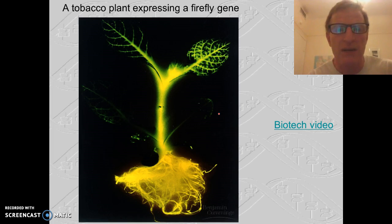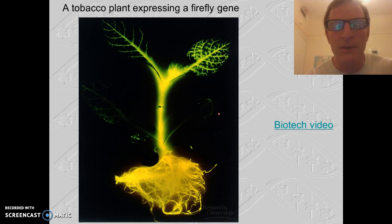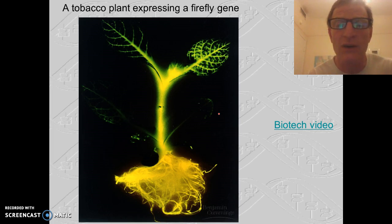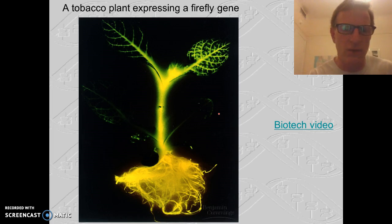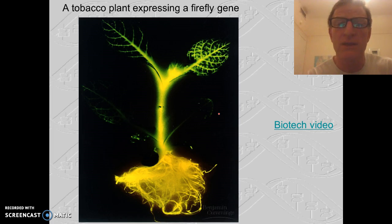Here's another example: a tobacco plant with a firefly gene inserted that causes it to glow in response to stress. When these tobacco plants are lacking a certain nutrient or water, they start to glow. You can imagine a farmer looking out at their crops and seeing them glow, knowing the plants will need water tomorrow. These are all fascinating examples of taking genes from one organism and inserting them into another — creating recombinant DNA, recombinant organisms, or genetically modified organisms.